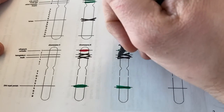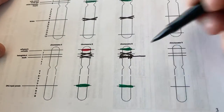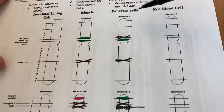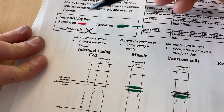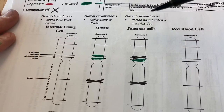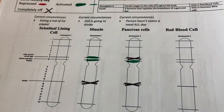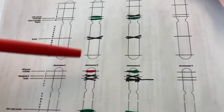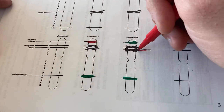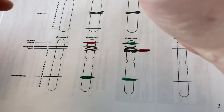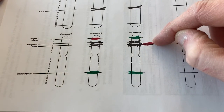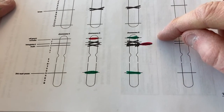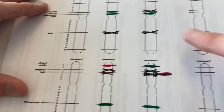Now for insulin in the pancreas cell — insulin is only in pancreas cells, so this is a match. I need to check the circumstances: the person hasn't eaten a meal all day. Insulin is only released when blood sugar goes up after eating. So while the cell could produce insulin, since it's not needed right now it's going to be repressed — turned off at the moment. Once a meal is eaten, the cell will turn this switch on, make insulin, and send it throughout the body.